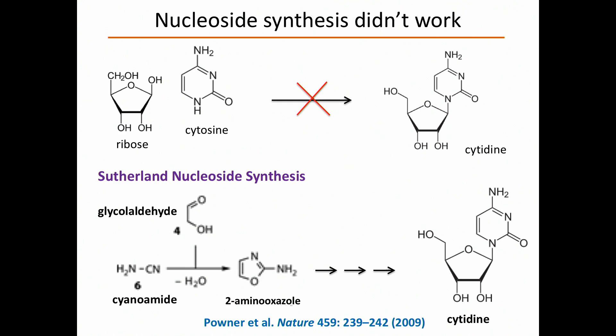He said: don't look at cytidine as being made up of ribose and cytosine joining up — you can make it by joining up different bits. The molecule glycoaldehyde reacting with cyanamide to make 2-amino oxazole, which in a few steps can be turned into cytidine. Only a very far-sighted chemist could see that — and John Sutherland made this very important discovery.